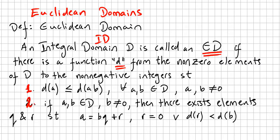The second condition: if a, b are in D where b is different from zero, then there exist elements q and r such that a equals bq plus r. This is a division algorithm, right? And r either equals zero or d(r) has to be less than d(b). If both these conditions are verified, we can say we are in a Euclidean domain.